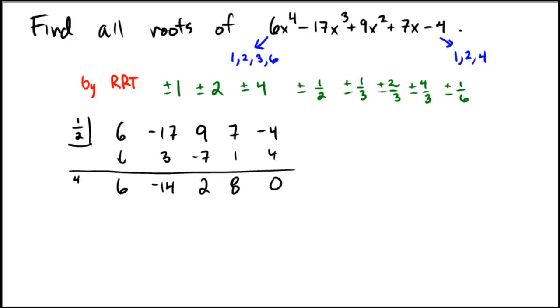Now the 4 thirds, I claim, is the other one that works. So if we divide it by the 4 thirds, 6 times 4 thirds is 8. And then there's a negative 6. And that's a negative 8. And that's a negative 8. And that's a 0.